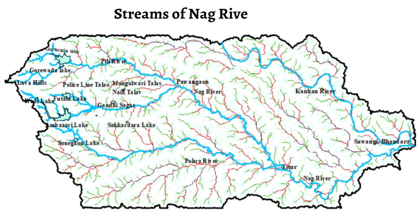Let us see the map of the Nag River Basin prepared using remote sensing, GIS and USGS images in GeoTIFF format. The area of the Nag River Basin is around 936 square kilometers and flows more than 77 km from Lava Hills to Savangi, the confluence of Nag River and Kanhan River. The basin encompasses all land drained by the Nag River and its tributaries. The Nag River probably gets its name from its serpentine or meandering course.